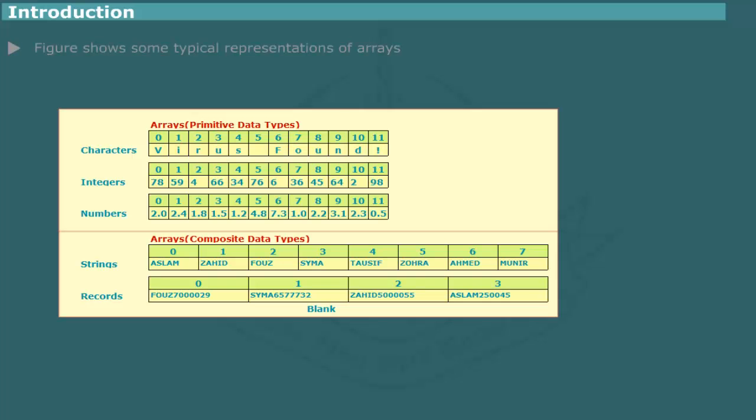It is customary to depict arrays pictorially with elements arranged from left to right. Figure shows some typical representations of arrays comprising different data types. Observe that each array structure contains items of same type.